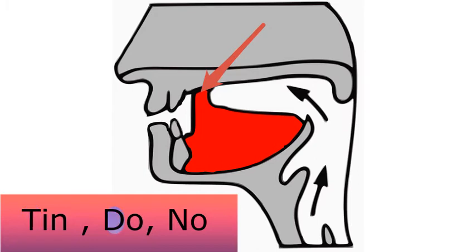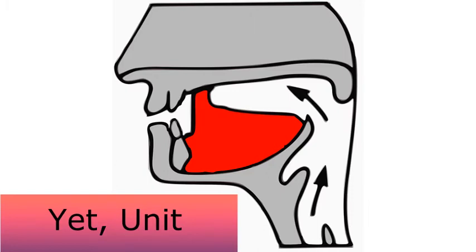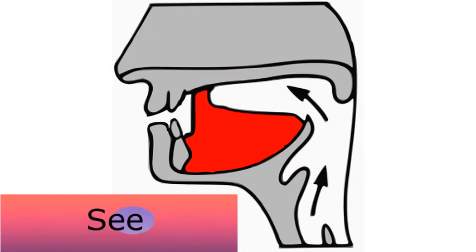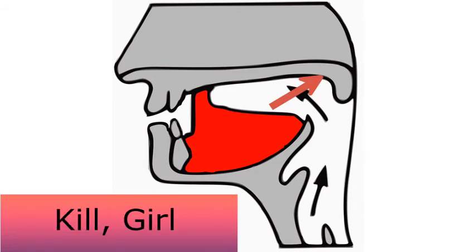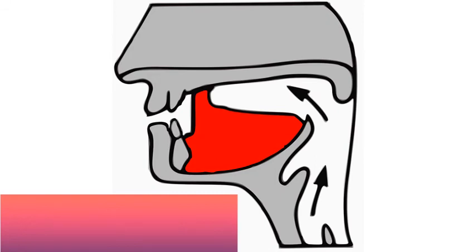In the English words tin, do, and no. The front of the tongue may be raised towards the hard palate to produce the consonants at the beginning of the words yet and unit, or the vowel sound in the word see. Similarly, the back of the tongue may be brought in contact with the soft palate to produce the consonants at the beginning of the words kill and girl. Further, the tip of the tongue can be curled back and the underside made to tap against the hinder part of the teeth ridge to produce the consonant at the end of the Hindi word toad.